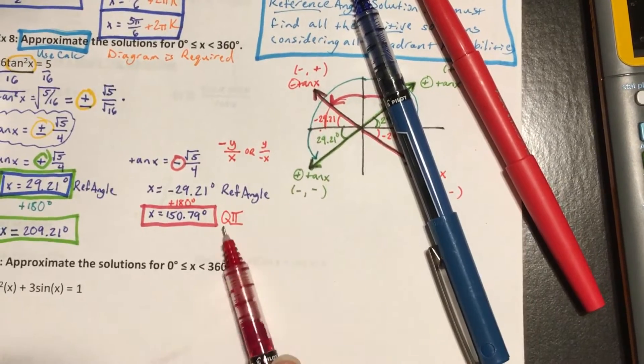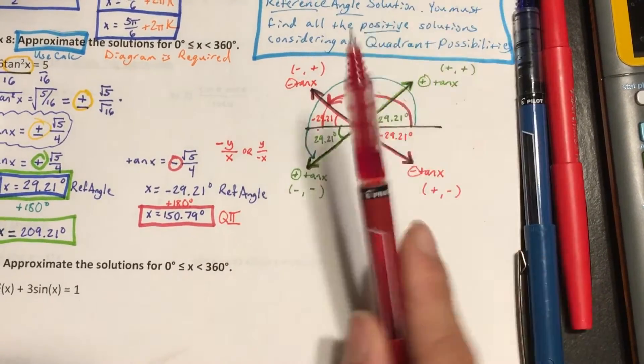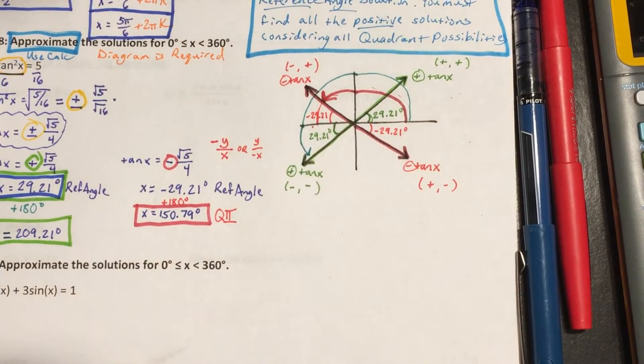So here we have found our quadrant 2 angle, 150.79 degrees, that gives me that negative tangent value.